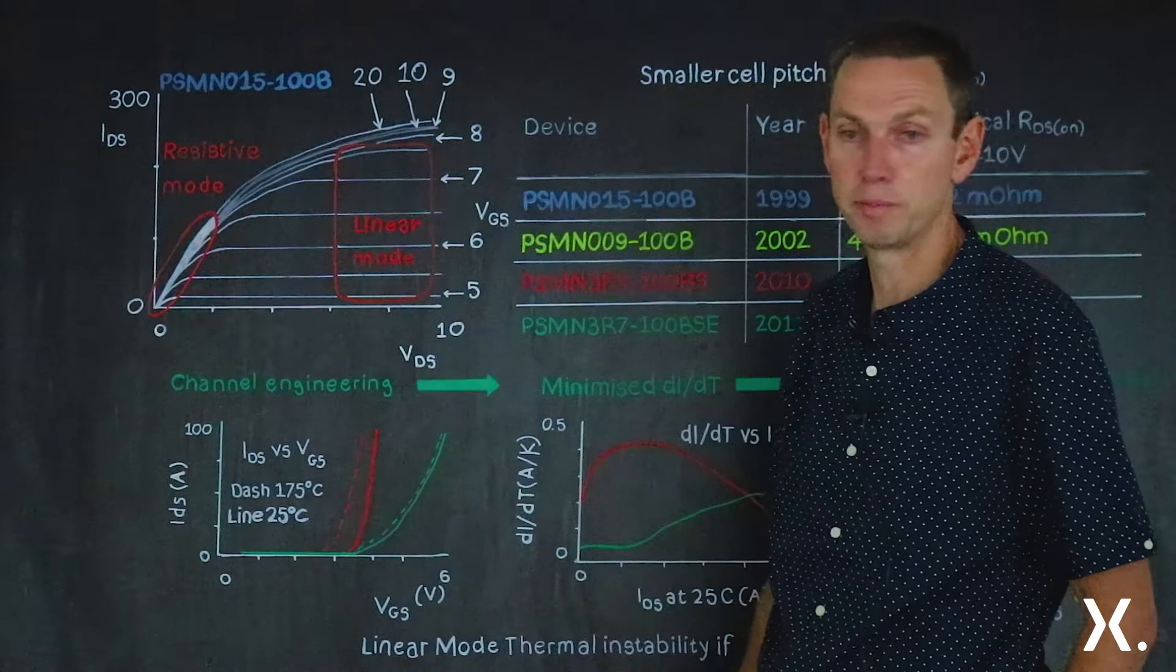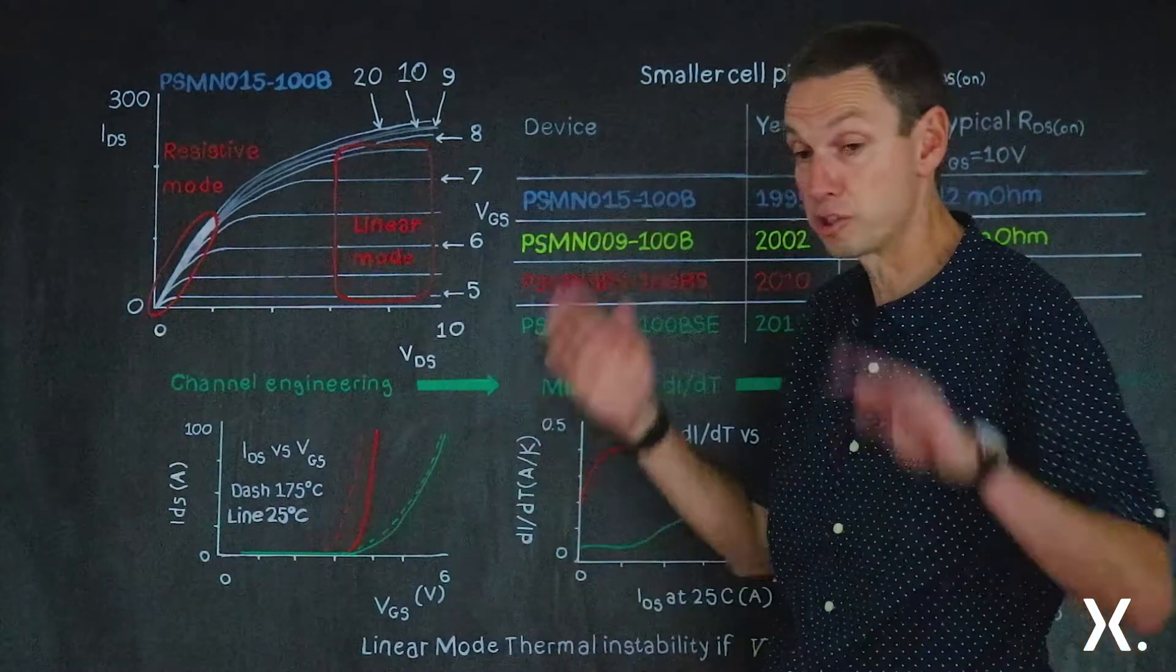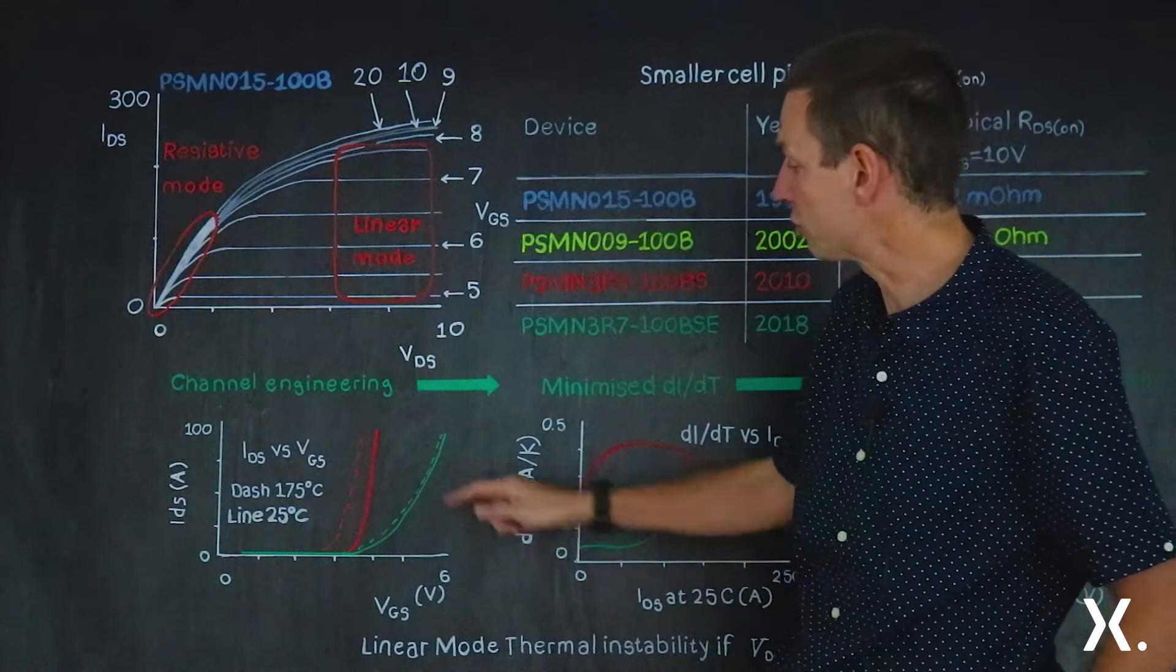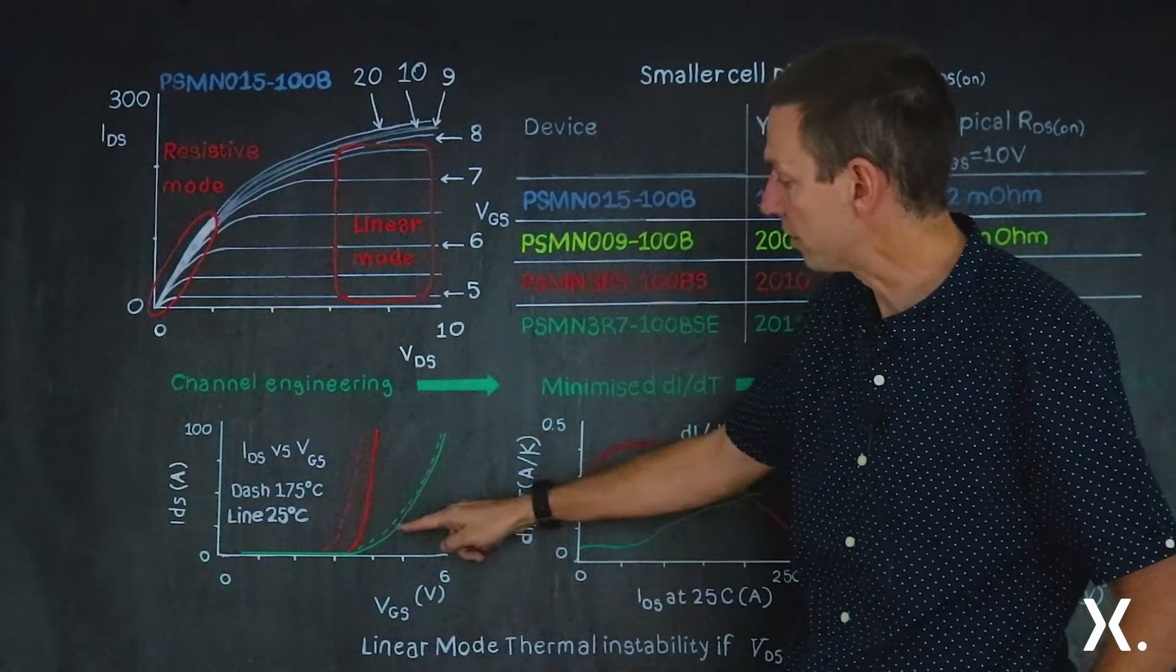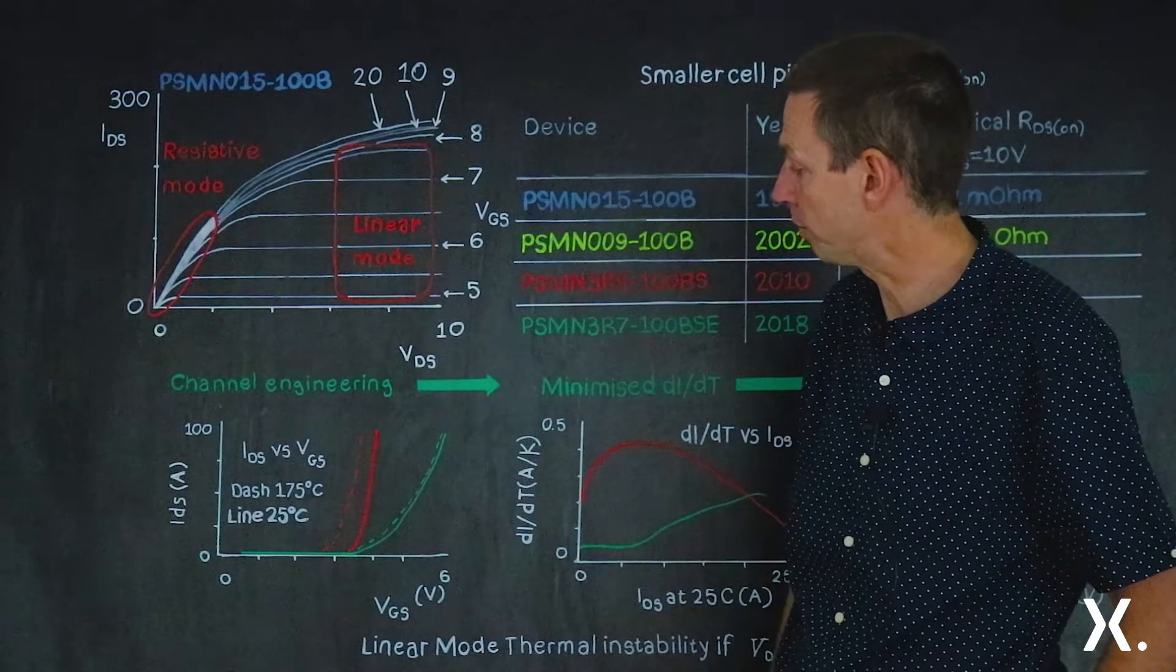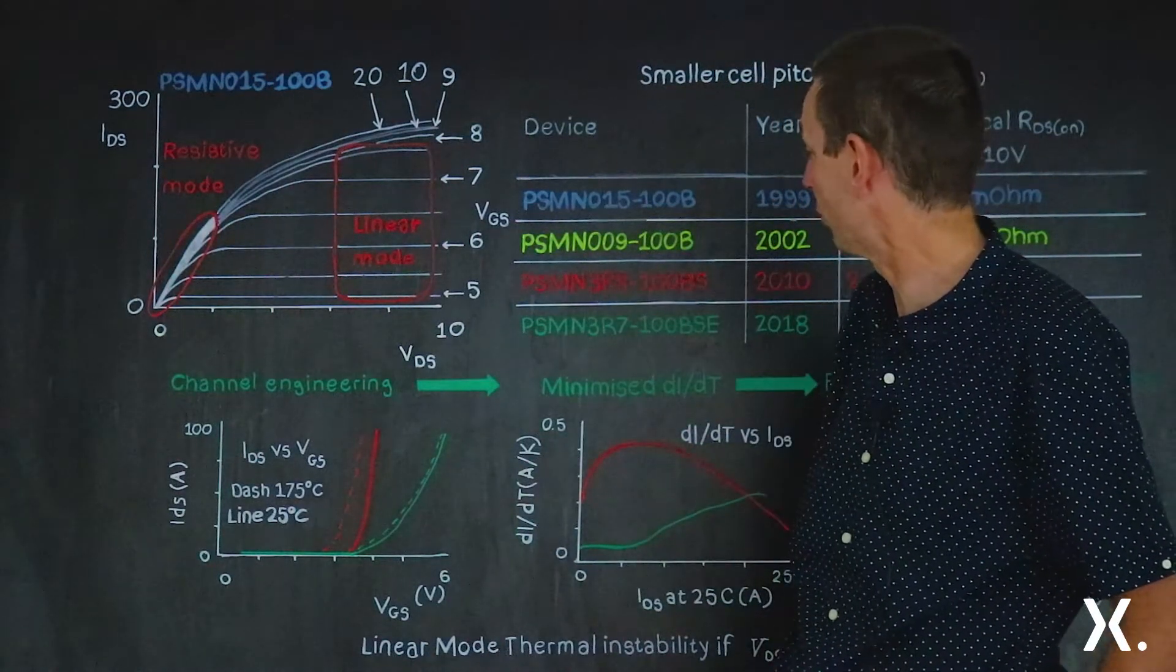So some clever channel engineering has been performed on this MOSFET. The trench pitch is still the same, but something around the trench has been engineered to minimize the DI-body-T. So its characteristics now start to look quite different to the red PSMN-3R8-100BSE.